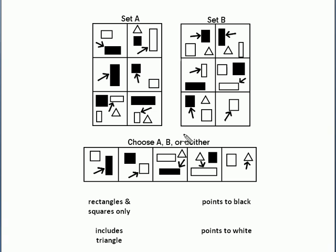There are triangles in set A and in set B, but not all the time. And then these arrows, they point to black or to white rectangles. Again, that's mixed across the two groups.